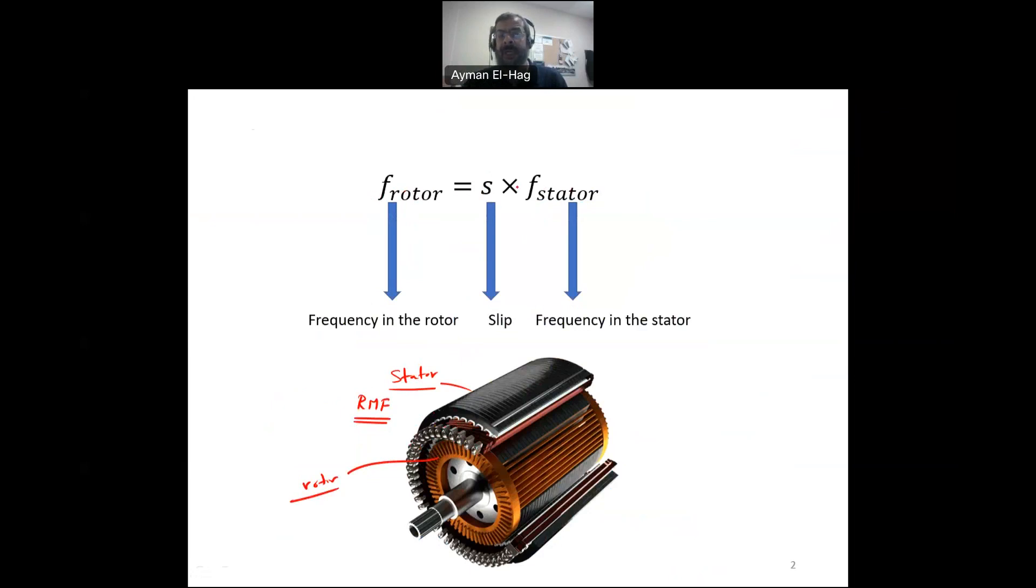Now, that voltage or that current will have a frequency much, much less than the stator. The frequency of the rotor is equal to a constant called S, the slip, times the frequency of the stator, which is basically depending on your country. It is either 50 hertz or 60 hertz. The slip typically is between 2 to 6 percent, which is 0.02 to 0.06.